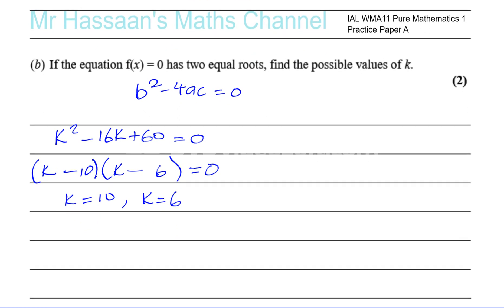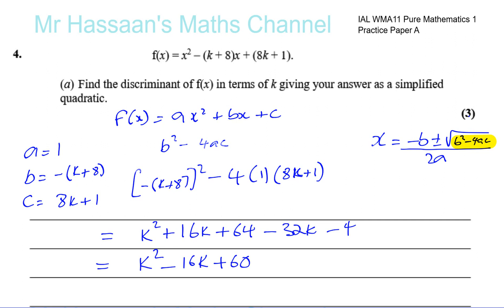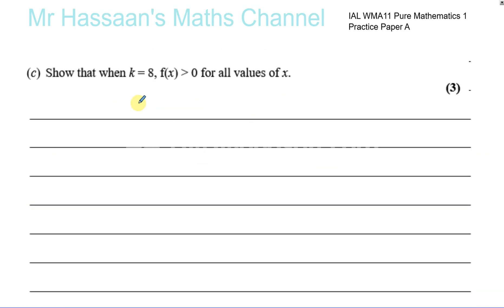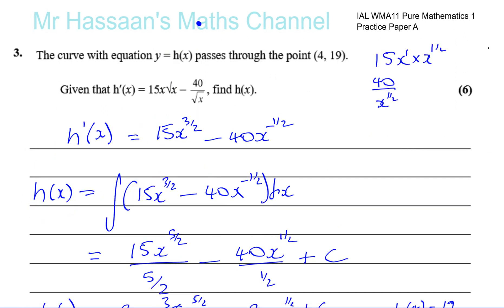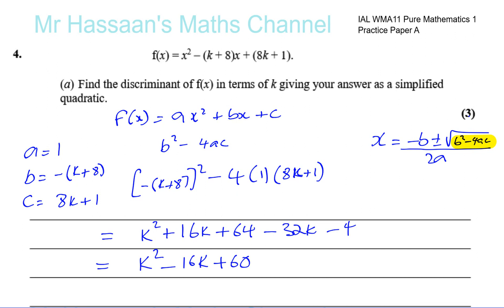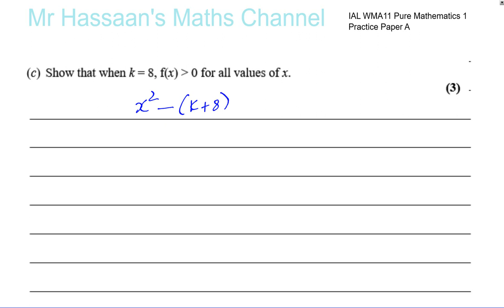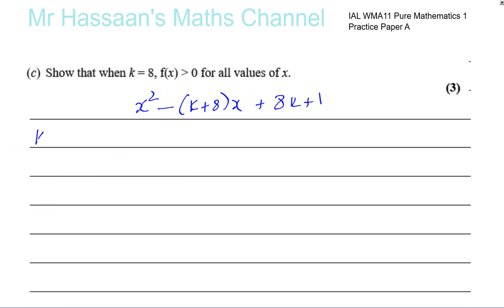Part c says: show that when k equals 8, f of x is greater than 0 for all values of x. When k equals 8, substituting into x squared minus (k plus 8)x plus 8k plus 1 gives x squared minus 16x plus 65, since 8 times 8 is 64 plus 1 equals 65.